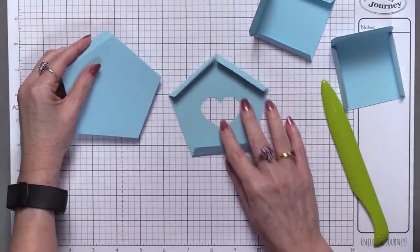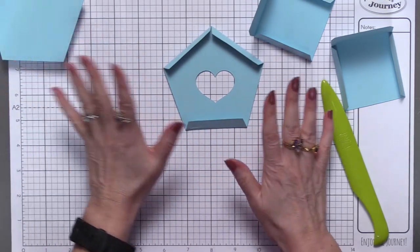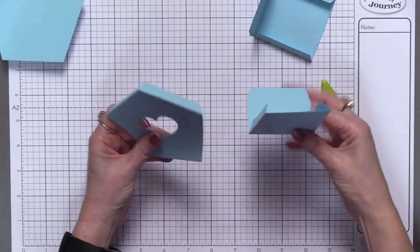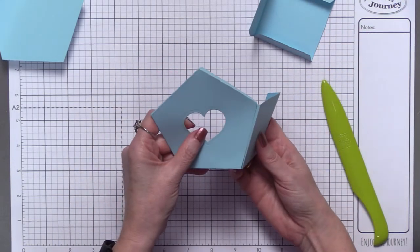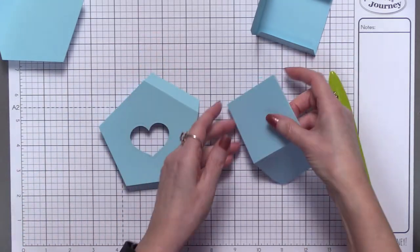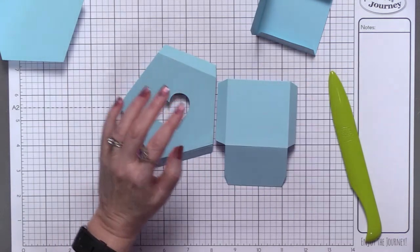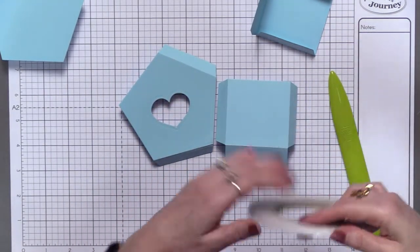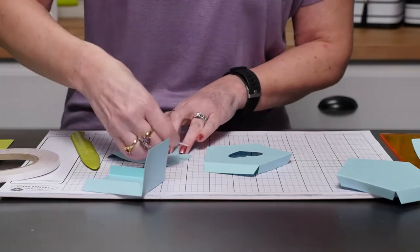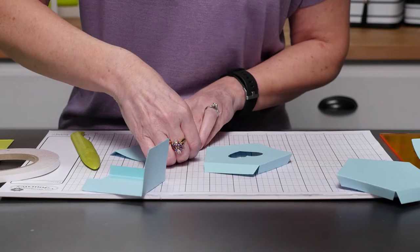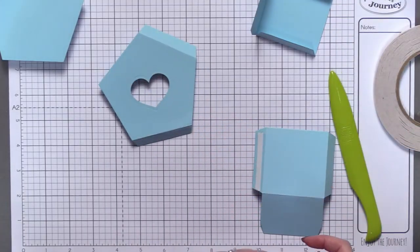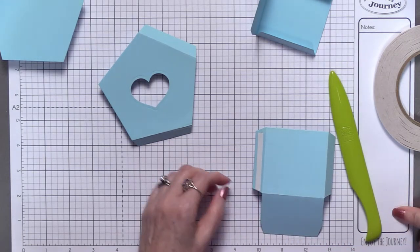The first thing we're going to do, the best way I have found to adhere this together, is you're going to put the floor pieces on the front door first. I like to use our white liner tape for these. You can use the tape runner, and of course you can certainly use the craft glue.